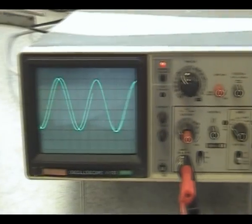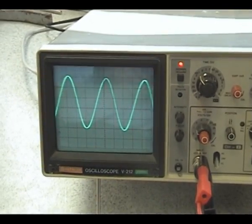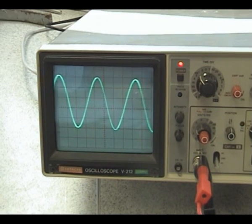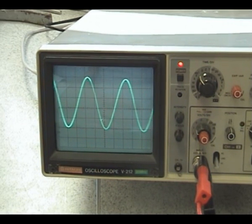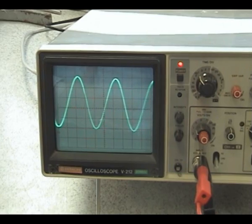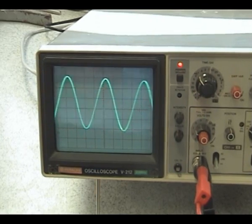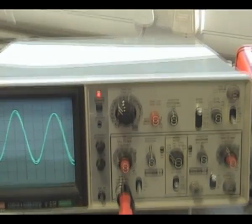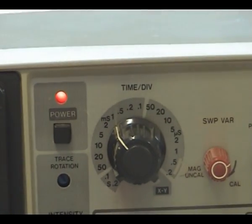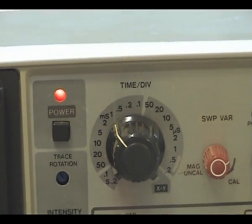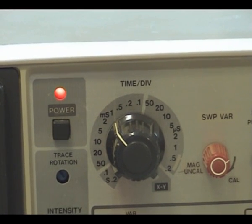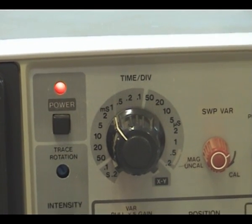250 hertz, the frequency of our sound signal. That's how we measure frequency using a CRO. Take the time-base reading, multiply it by the number of divisions that make up one wave to get the period, then frequency equals one over the period.